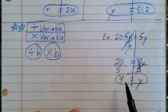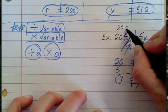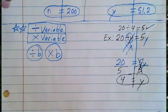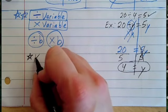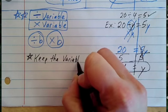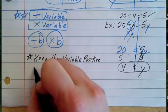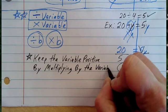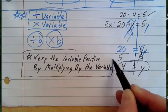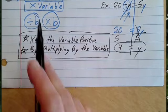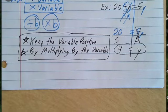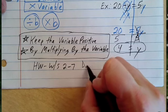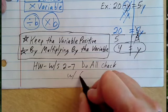If y equals 4, does that make sense? From the original equation: 20 divided by 4 equals 5. Yes — that's how I can check. So to remember this: if you're dividing by a variable, keep it positive by multiplying it to the other side — just like with subtracting a variable, you added it to the other side. Your homework is worksheet 2-7, do all problems, and check with a calculator.